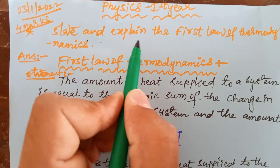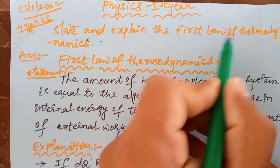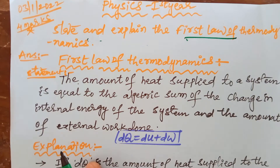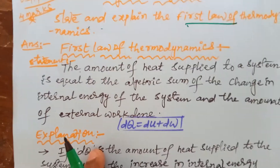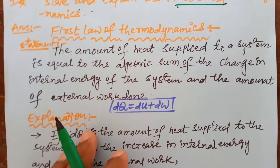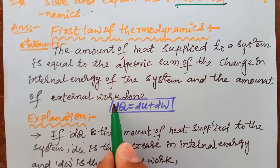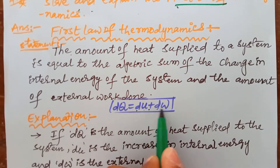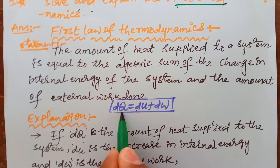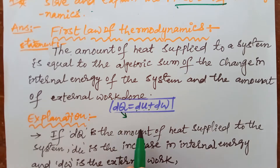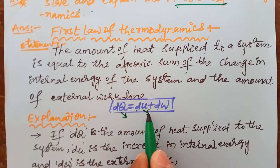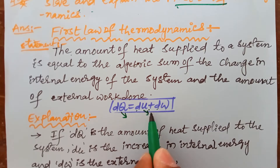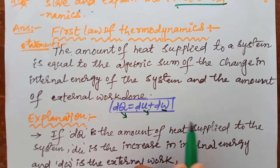State and explain the first law of thermodynamics. You already know the statement: dQ is equal to dU plus dW. Here, Q means the amount of heat energy, U means internal energy, and W means work done.